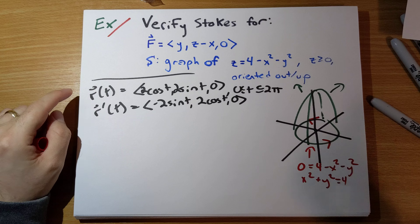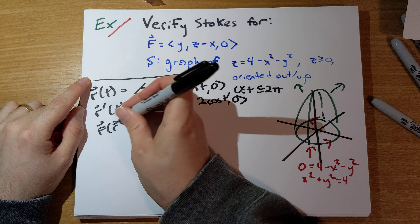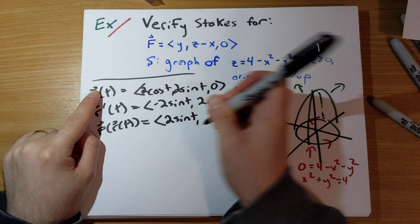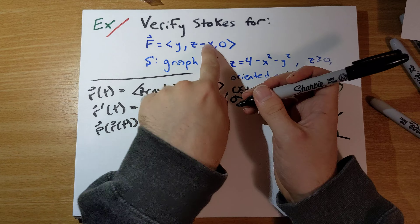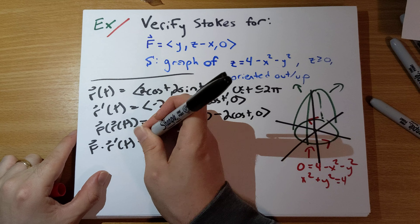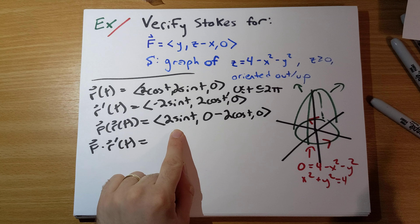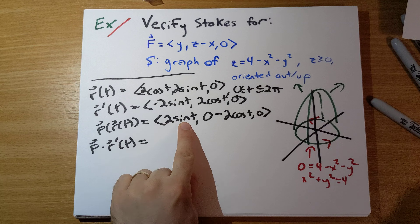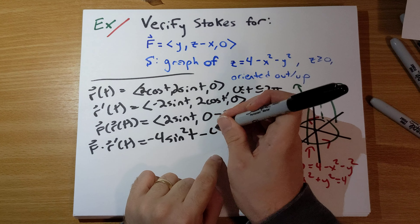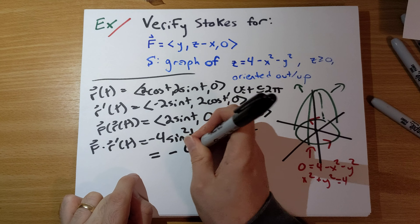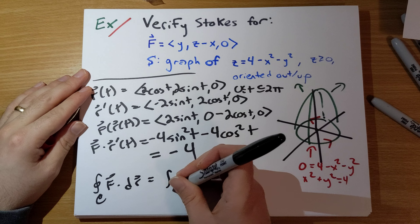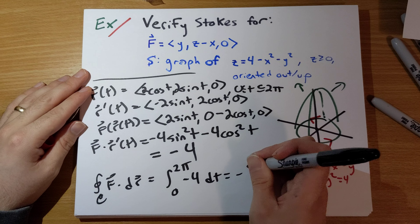We need F(R(t)). Y gets replaced with 2sin t, Z gets replaced with zero, and X gets replaced with 2cos t. Then F · R' gives us: -2sin t times 2sin t is -4sin²t, and then -4cos²t. This gives us -4. So our line integral around the boundary is the integral from 0 to 2π of -4 dt, which is -8π.